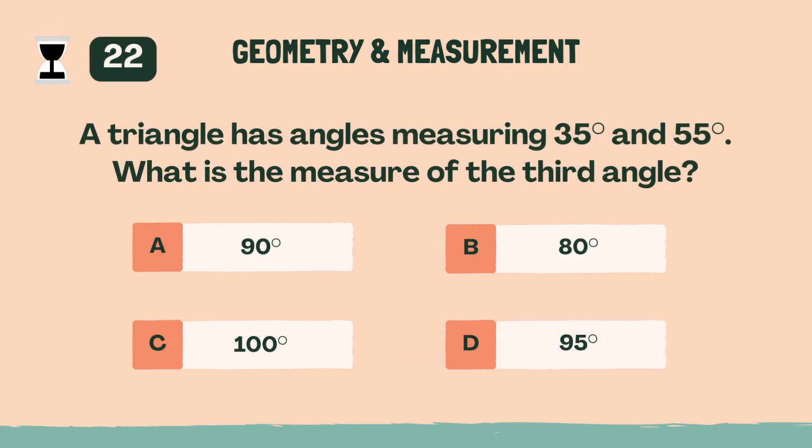A triangle has angles measuring 35 degrees and 55 degrees. What is the measure of the third angle? A, 90 degrees.